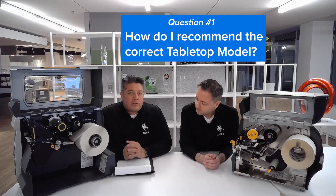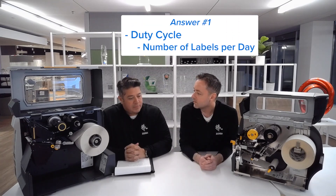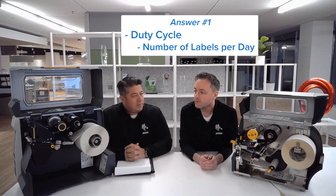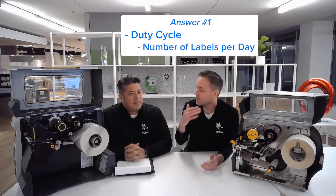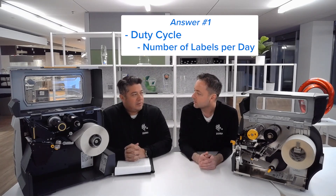Okay, first question: how do I recommend the correct tabletop printer to my customer? That's a great question. I wish there was one straightforward answer, but if we had to boil it down, the main question we should be asking our customers is the duty cycle. That's probably one of the most important things — basically, how many labels per day are you going to be printing out of this printer? So duty cycle is very important.